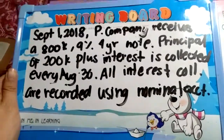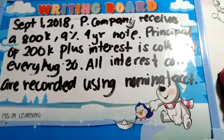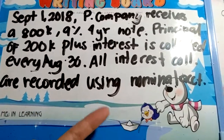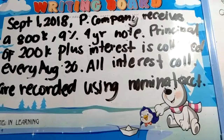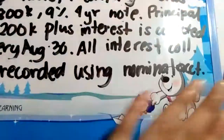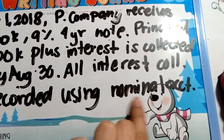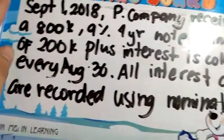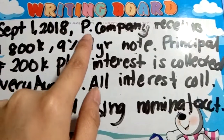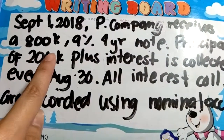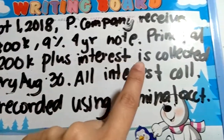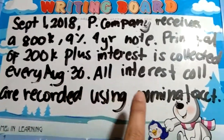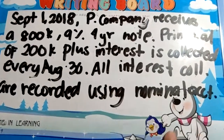To make a concrete example: it's important to find out what method they are using — asset method, liability method, expense method, or income method. If you see the word 'nominal account,' that means it's either the income method or expense method. Here, on September 1, 2018, P Company receives an 800,000, 9% note. Principal of 200k plus interest is collected every August 30. All interest collected are recorded using nominal account.